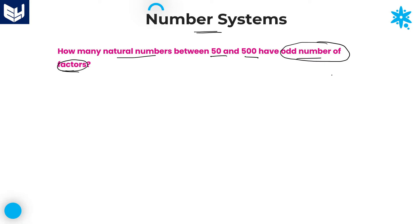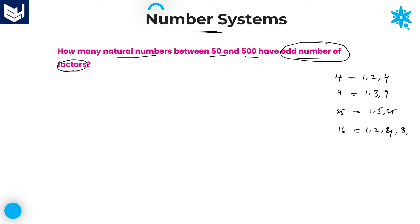I will tell you one small example. If you observe carefully, for the number 4, the factors are 1, 2, and 4. Similarly, for the number 9, the factors are 1, 3, and 9. And for 25, the factors are 1, 5, and 25. And if you take 16, the factors are 1, 2, 4, 8, and 16. The number of factors are 3, 3, 3, and 5 respectively.